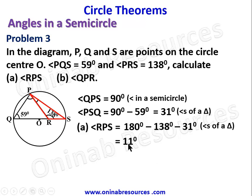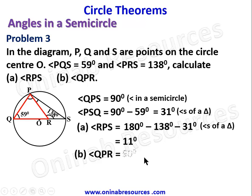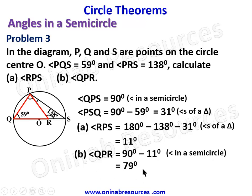We have already established that angle QPS is 90 degrees. Therefore to calculate angle QPR, we note that angle QPR plus angle RPS gives 90 degrees.